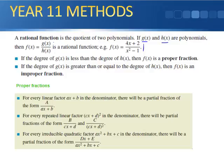If the degree of g(x) is less than the degree of h(x), then it's a proper fraction, because the numerator is smaller than the denominator. If it's the other way around — if the degree is bigger in the numerator than in the denominator — then we have an improper fraction.